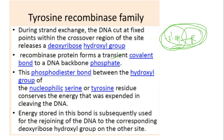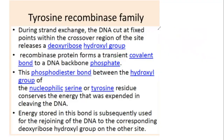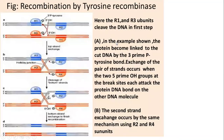This energy stored in the bond is used for rejoining the DNA to the corresponding deoxyribose hydroxyl group on the other side. When recombination is done, the bond between the recombinase and the 3'-OH is broken, and that released energy is used to make bonds in the DNA strand when recombination is over. Let's see with the help of an example.